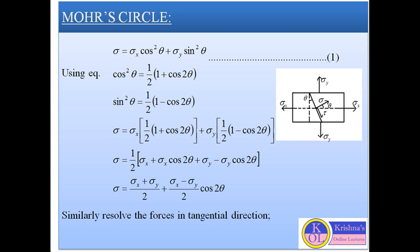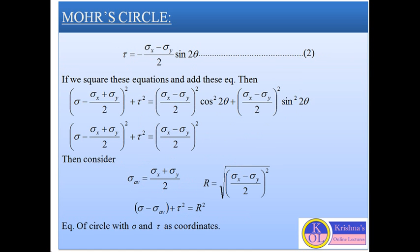After substituting the values of cos²θ and sin²θ, the final equation for normal stress is: sigma = (sigma x + sigma y)/2 + (sigma x − sigma y)/2 · cos 2θ. Similarly, if we resolve all forces in the tangential direction, the equation for tangential shear stress is: tau = −(sigma x − sigma y)/2 · sin 2θ.